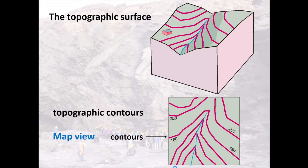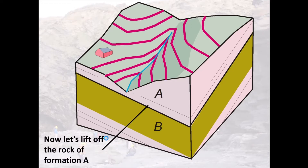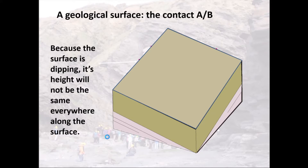All a topographic contour does is show you how height is varying along the surface. So why can't we draw contours for other surfaces? Let's imagine we have two sedimentary beds A and B, and between them there's a boundary — a bedding plane. Let's call that surface AB, the plane that separates A from B. Imagine we could lift off rock unit A to expose that plane.